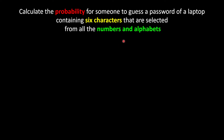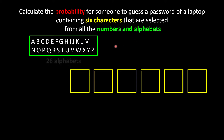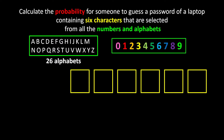Question number 2: calculate the probability for someone to guess a password of a laptop containing 6 characters selected from all numbers and alphabets. For this case I will assume the alphabets are not case-sensitive, meaning all 26 alphabets — whether capital or small letters — are treated the same. If they were case-sensitive, we would multiply by 2. All numbers means zero to nine, giving us 10 numbers.